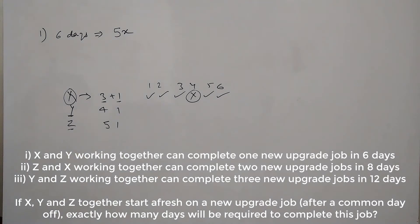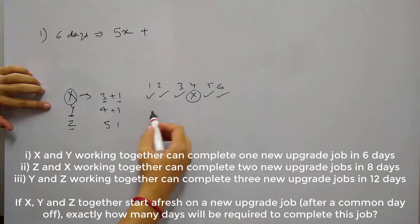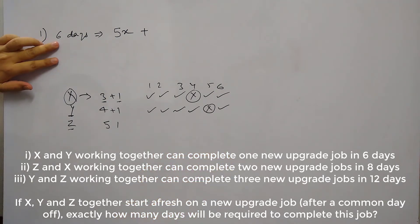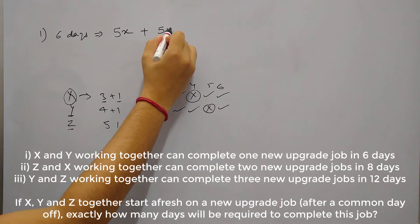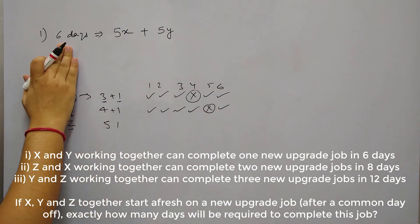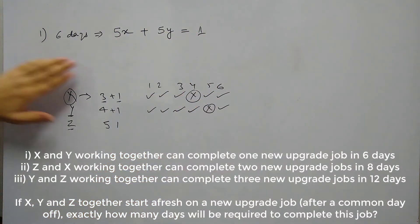So X completed 5X work and Y again Y has a working pattern of 4 plus 1 days. So in this 6 days Y will work for 1, 2, 3 and 4 day. 5th day will be off for Y and then Y will work for 6th day. So in total Y will work only for 5 days out of this 6 days. So in total Y will work for plus 5Y unit of work. Now together X and Y they worked for 6 days but actual working days is 5. And they completed 1 unit of job. So we can write 5X plus 5Y is 1.